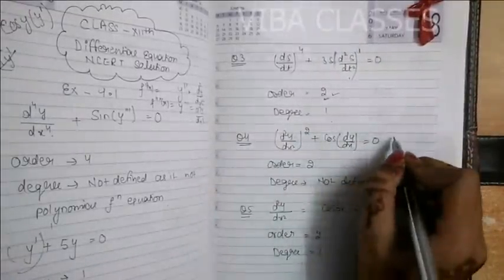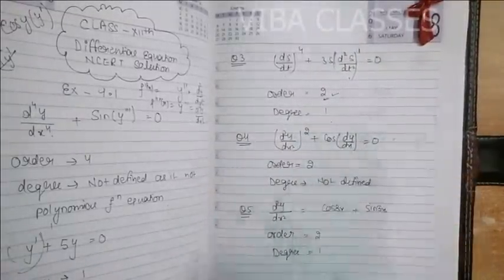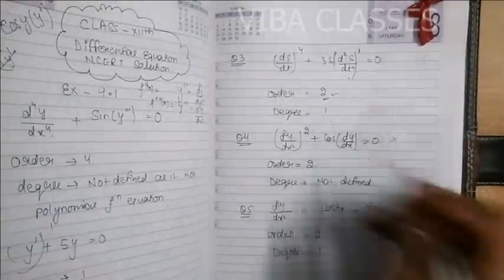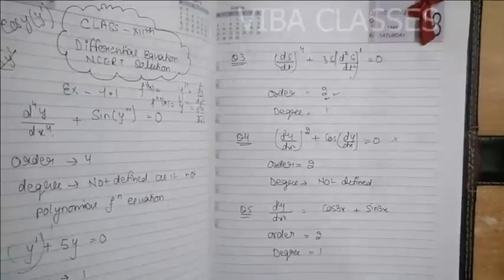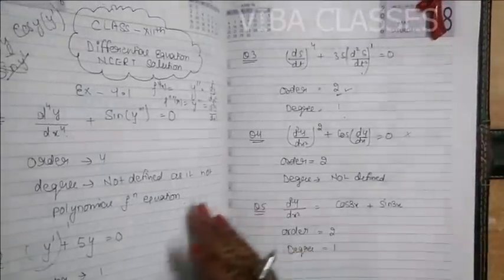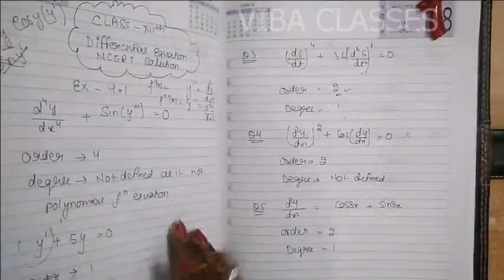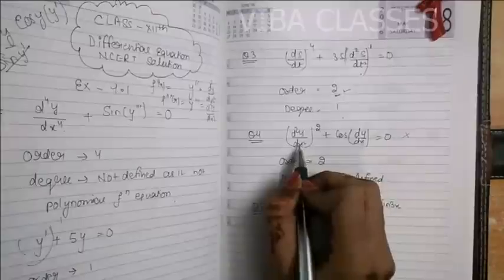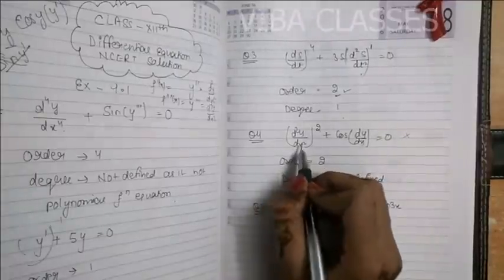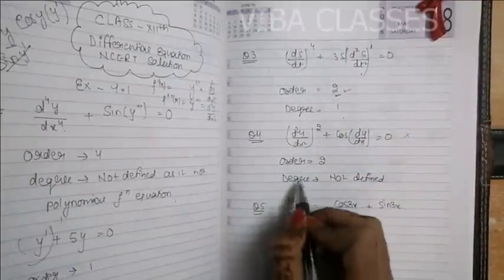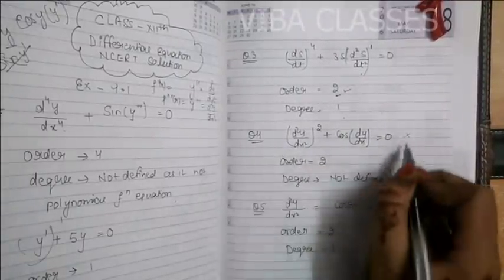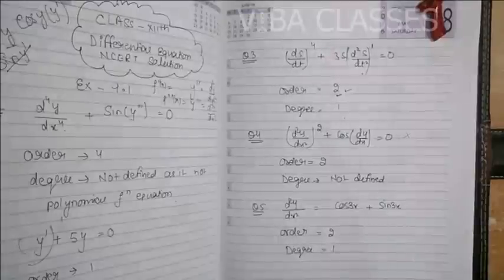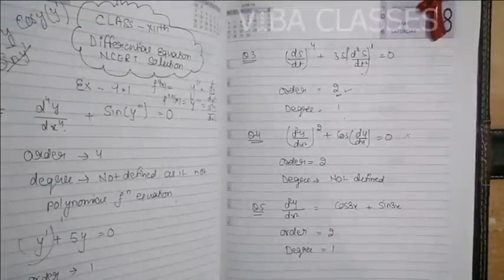This one is definitely not a polynomial function because cos(dy/dx) cannot appear in a polynomial. The first order derivative and second order derivative are present, so the order is 2. But the degree is not defined because it is not a feasible differential equation — cos(dy/dx) cannot come.